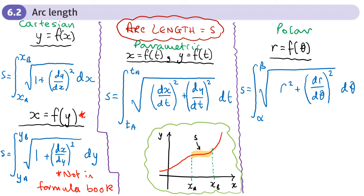This is the second section of chapter six on integration techniques, and here we're going to be looking at finding the arc length of a graph or some sort of curve. The different types of graphs we can get come from a Cartesian equation, a parametric equation, or a polar equation. When we're working out the arc length, imagine some sort of graph between two limits. We call this the arc length and we're going to use the letter s.